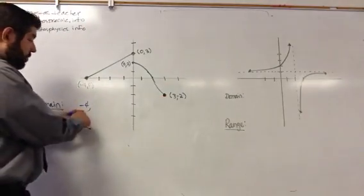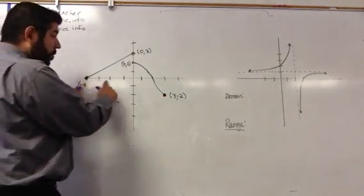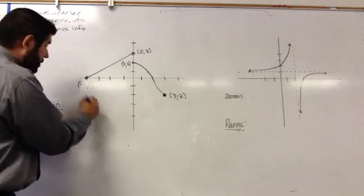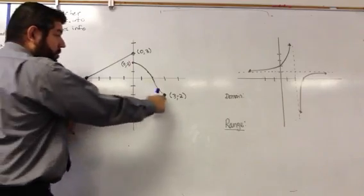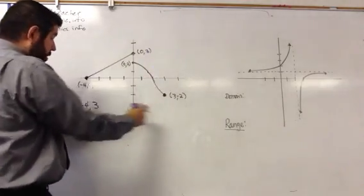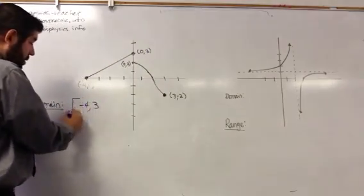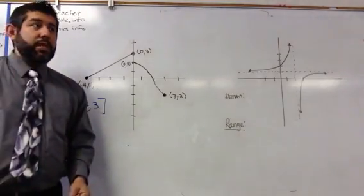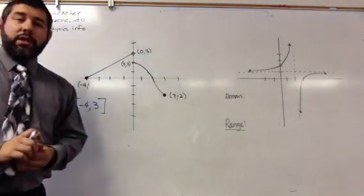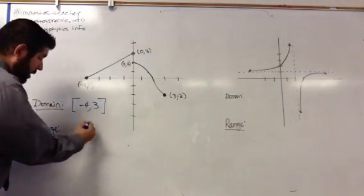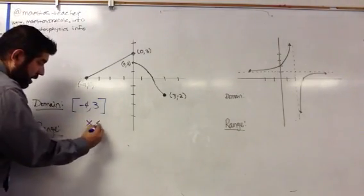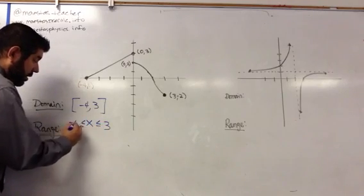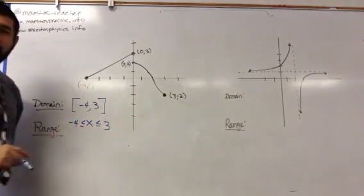So we're going from negative 4 to 3, and since both of these are included in my range, I'm going to use brackets for interval notation. If we want to use non-interval notation, we can write it as x is between negative 4 and 3.